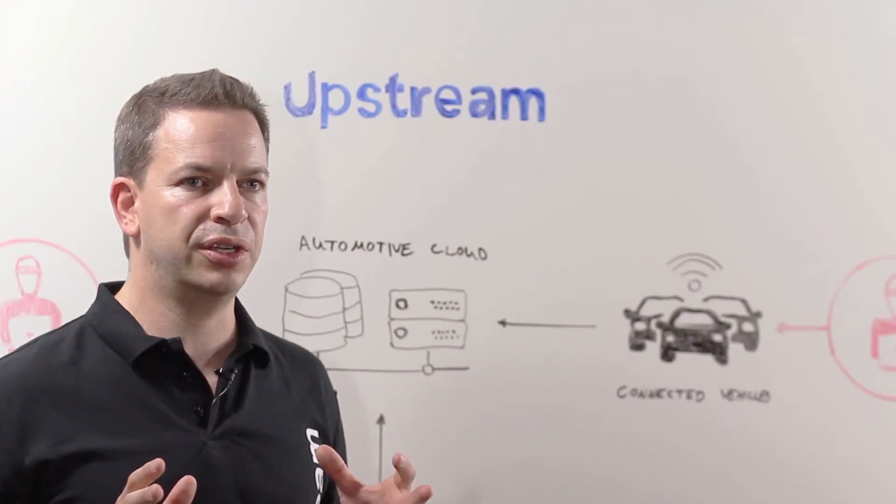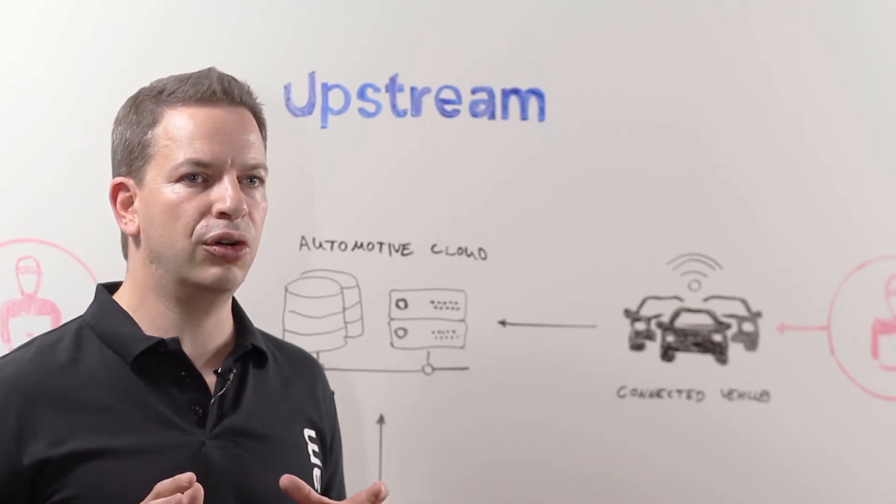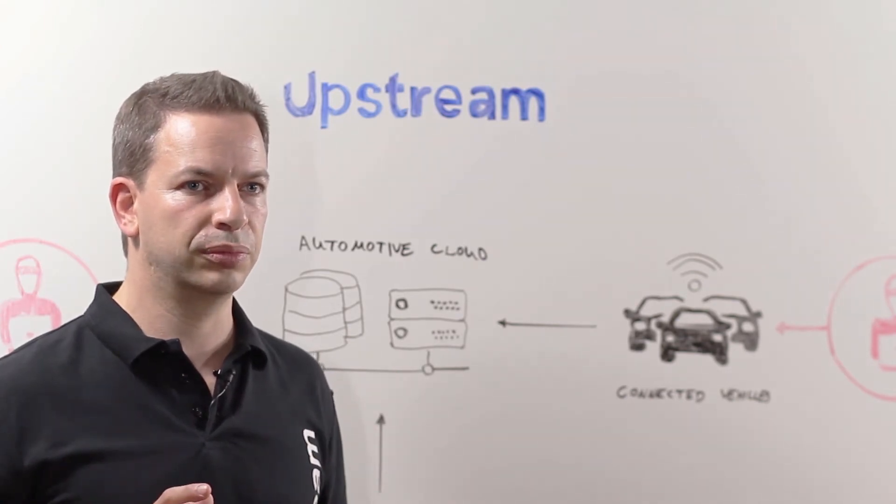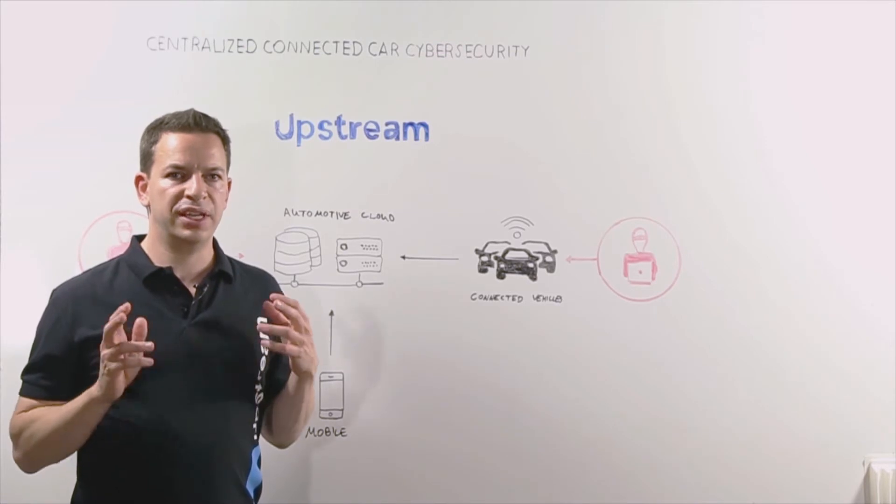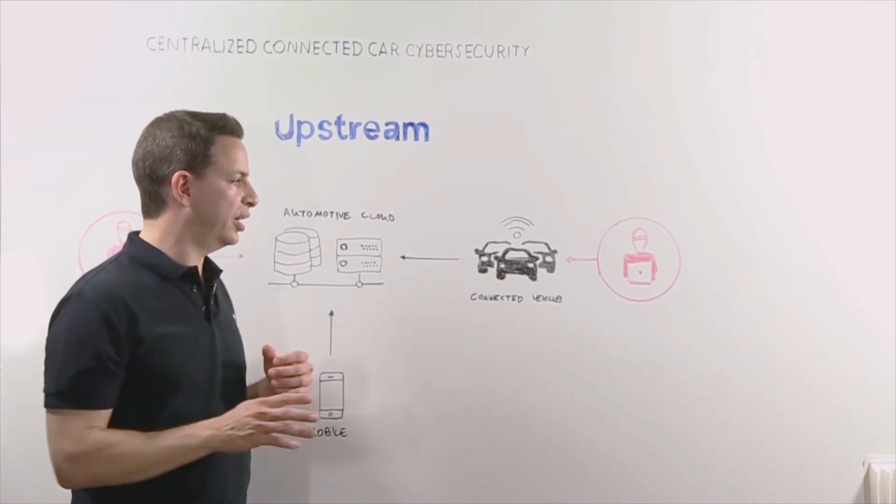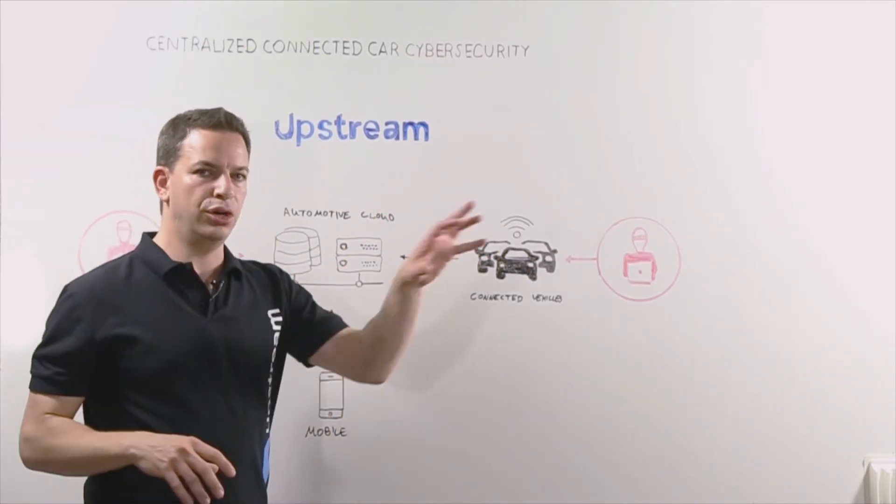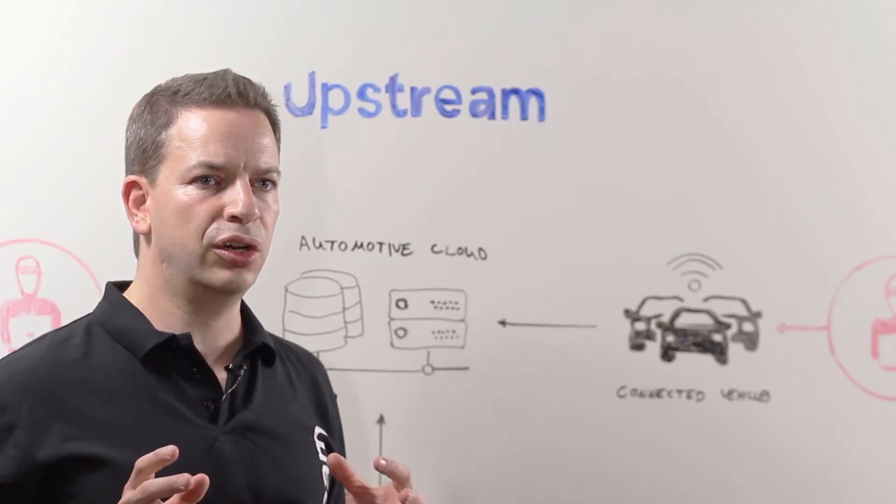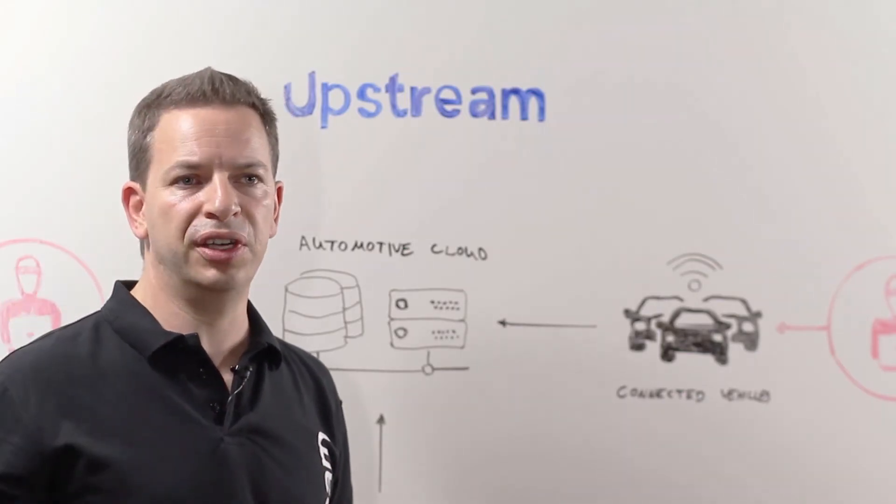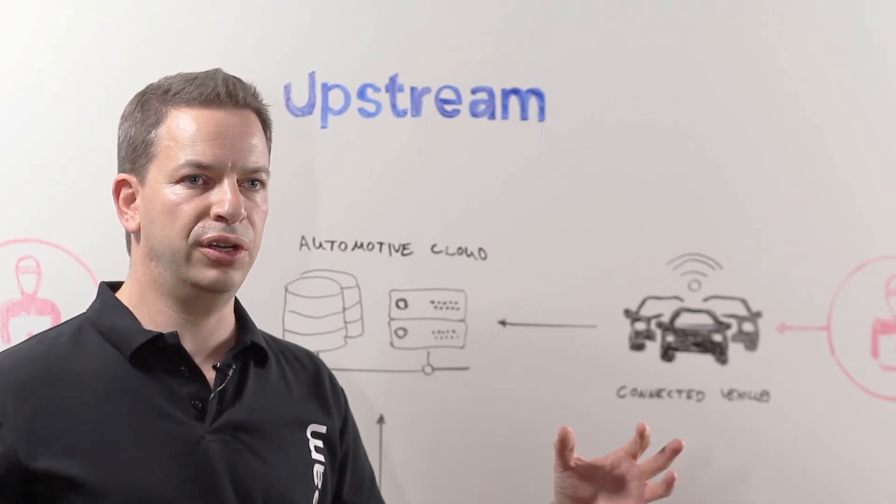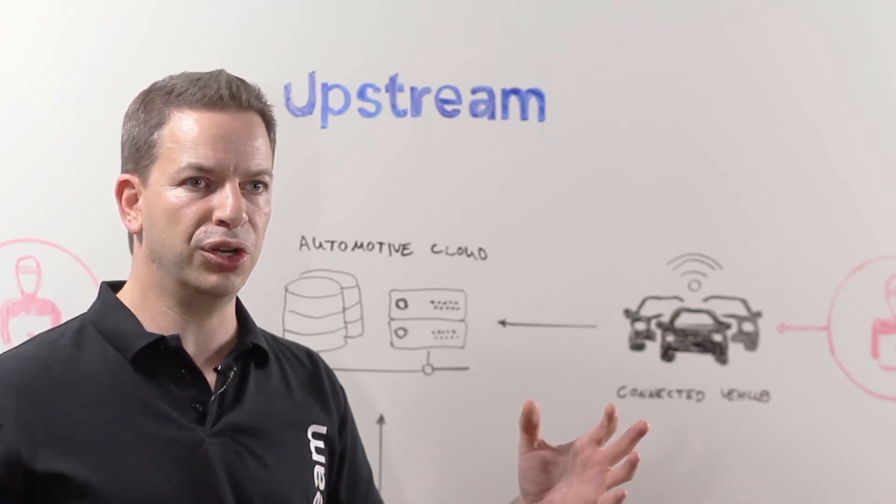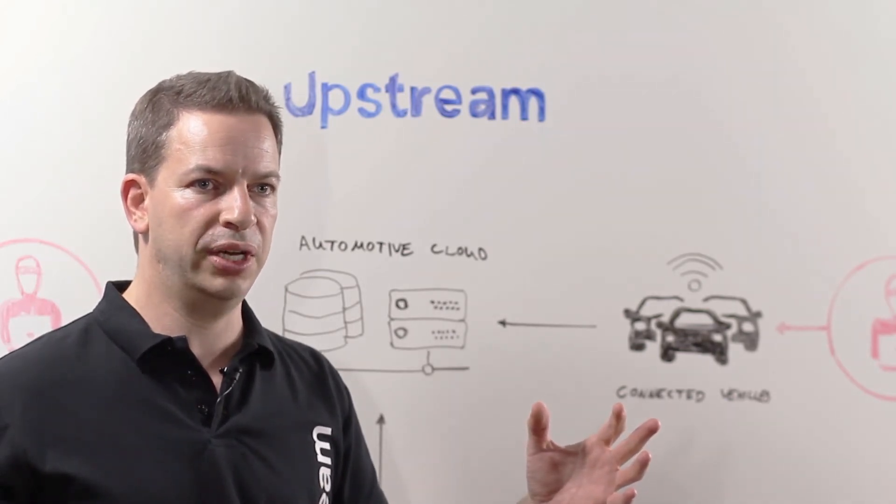When we looked at the problem of how to secure a connected car, we had three goals in mind in building our solution. The first goal was that the solution had to be able to protect against remote attacks generated over the internet. The second goal was that we wanted to protect both the single vehicle as well as the entire vehicle fleet, spanning across multiple make models at the same time.